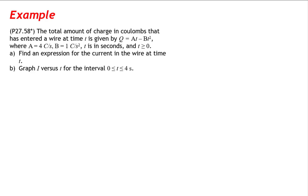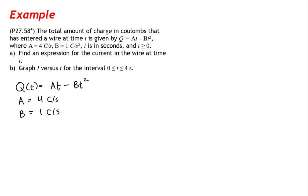Let's begin by recognizing that our charge is a function of time. Charge as a function of time is given as at minus bt squared, with constants a equal to 4 coulombs per second and b equal to 1 coulomb per second squared. Our goal is to find an expression for the current in the wire at time t. Remember, current is equal to the time rate of change of charge, so since we have charge as a function of time, we just have to differentiate our function.